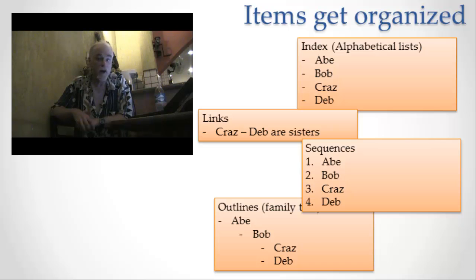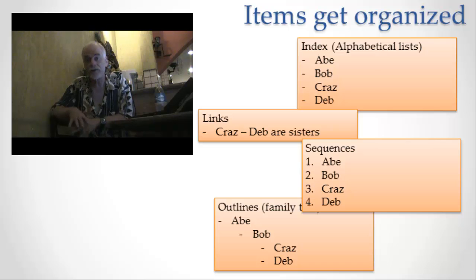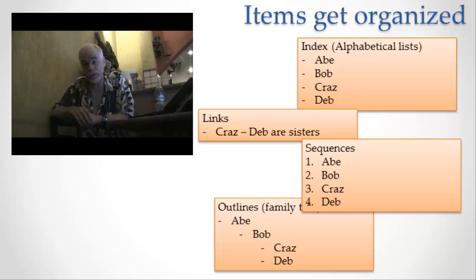The first big way we organize information is by indexes. Indexes — which we'll talk a lot more about when we talk about Google — are alphabetical and sometimes numerically sorted lists of names. And you can totally understand this for people's names.